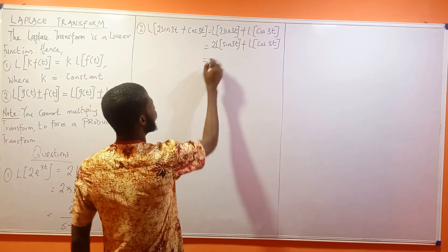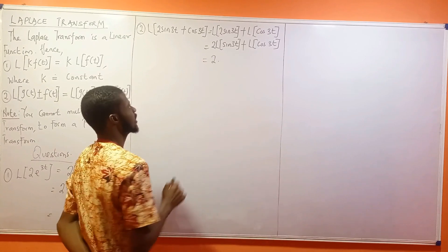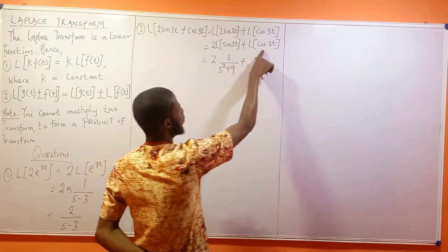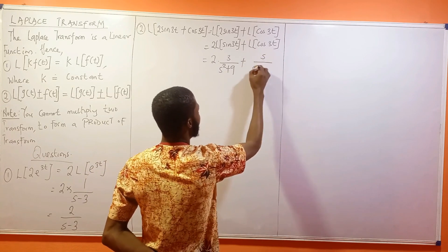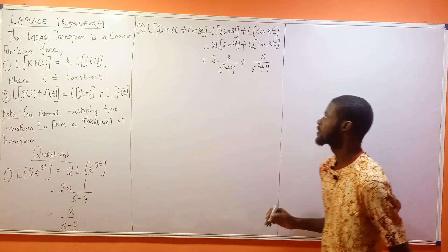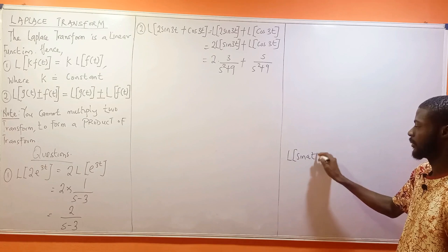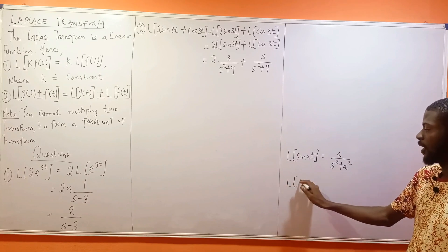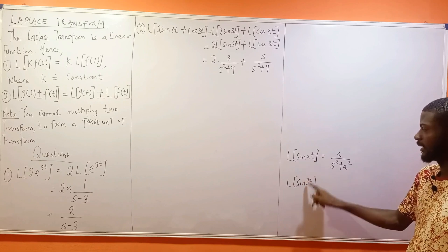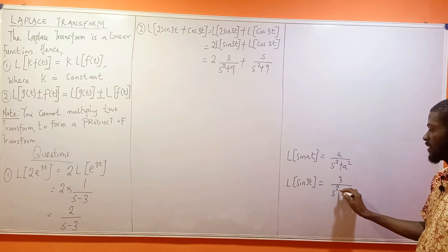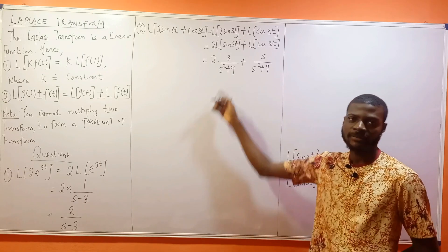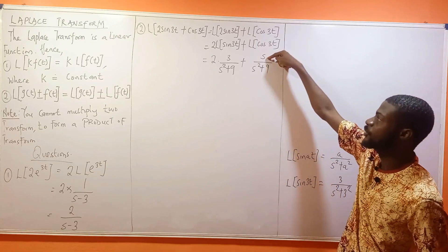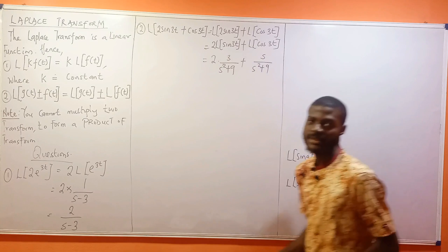This becomes 2 times 3 over (s² + 9), then plus the Laplace transform of cos(3t) which is s over (s² + 9). Note: the Laplace transform of sin(at) is always a over (s² + a²). So the Laplace transform of sin(3t) is 3 over (s² + 9), since a = 3 and 3² = 9. For sine, you have 'a' in the numerator; for cosine, you have 's' in the numerator.